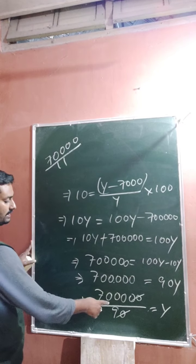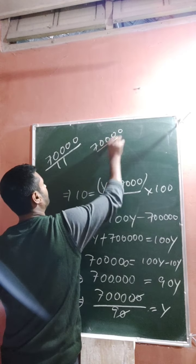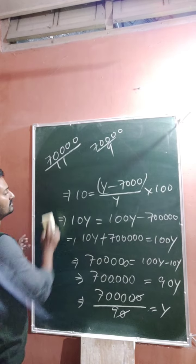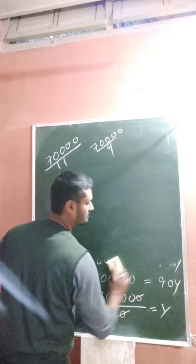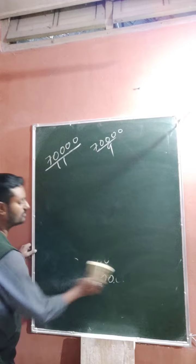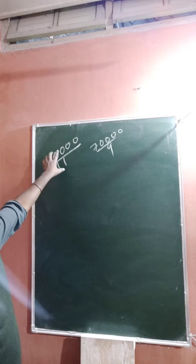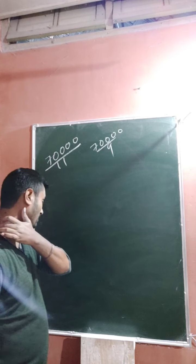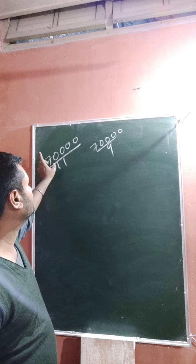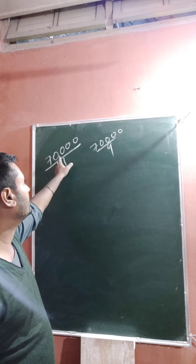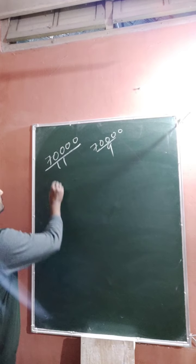So the cost price of the second Doraemon part is seventy thousand divided by nine. And the cost price of the first Doraemon part was seventy thousand divided by eleven. So now: CP of one is seventy thousand divided by eleven, and CP of two is seventy thousand divided by nine.